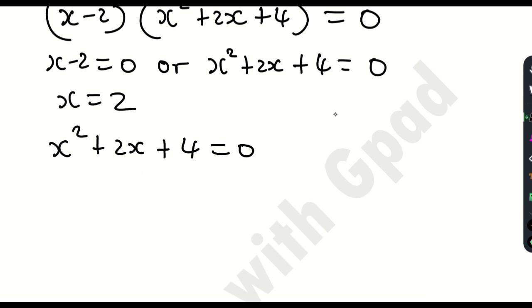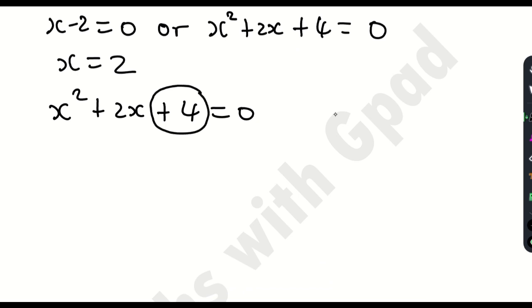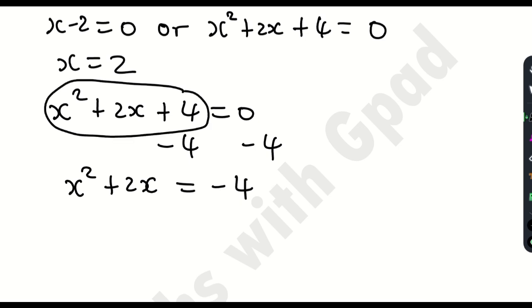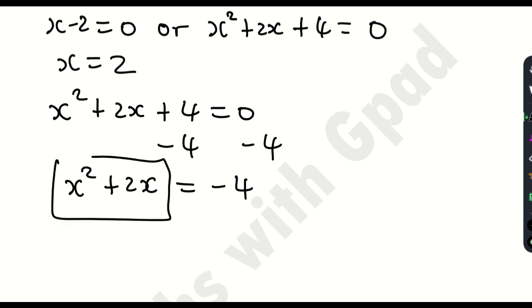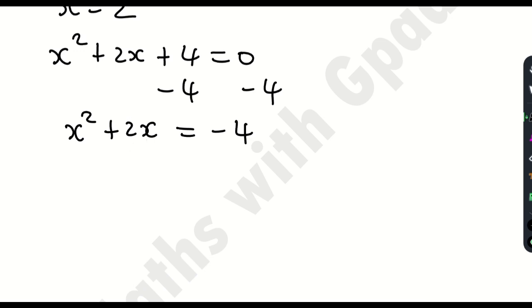I'm going to use the completing the square method. The first thing I'll do is get rid of the plus 4 by subtracting 4 from both sides. So x squared plus 2x equals negative 4. This is called completing the square — the expression is not a perfect square, so I remove the constant term and will add a new constant term that makes it a perfect square.